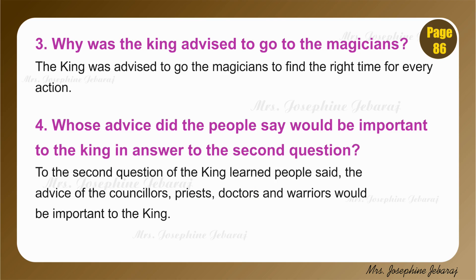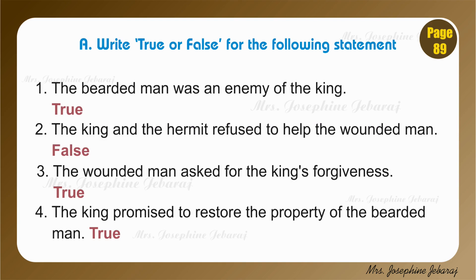Question number 3. Why was the king advised to go to the magicians? Question number 4. Whose advice did the people say would be important to the king in answer to the second question? In answer to the second question of the king, the learned people said the advice of the counselors, priests, doctors, and warriors would be important to the king.